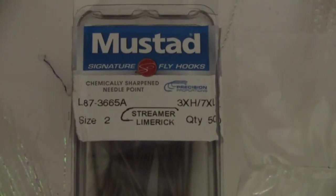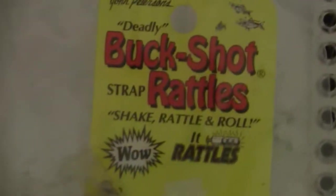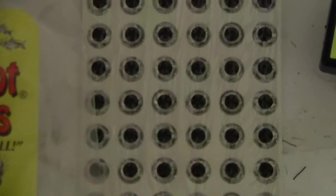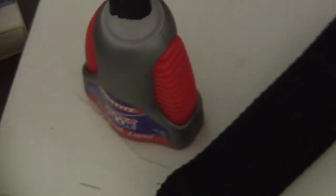Ingredients list: Mustad L87-3665A Streamer Hooks size 2. Thread is 130-200 Denier Gelspun, the flash is Pearl Web from Flytire's Dungeon, the rattles are Buckshot Rattles from Northland Tackle, the eyes are 7mm Silver Eyes, the body is Easy Body Medium Pearl. The size medium is the key for the size of the rattles. I also use UV Knot Sense from Loon and the lamp that cures it and super glue.